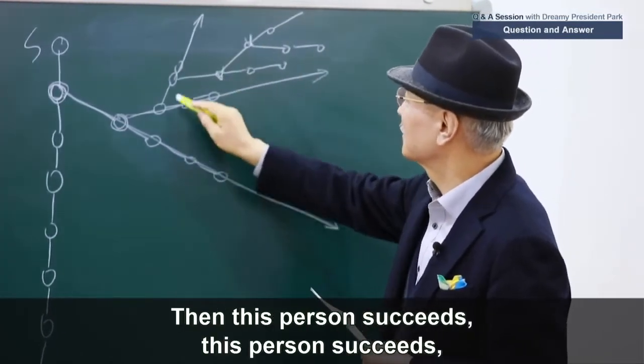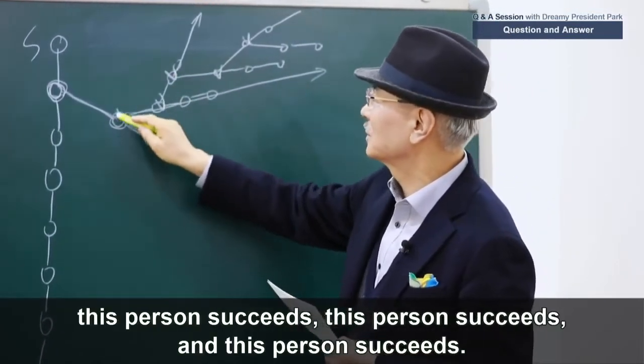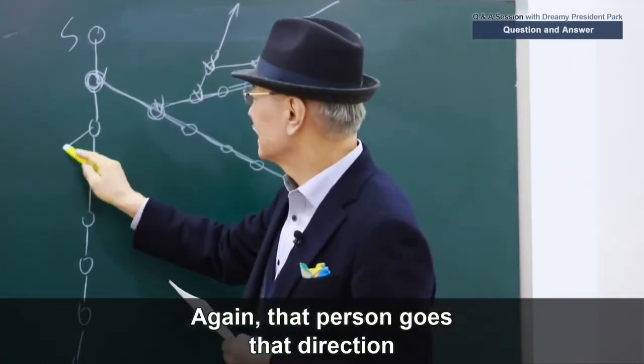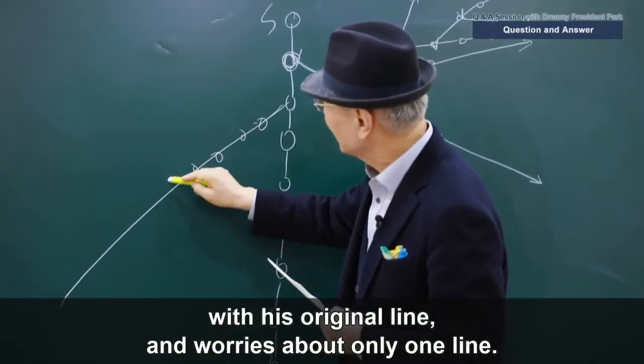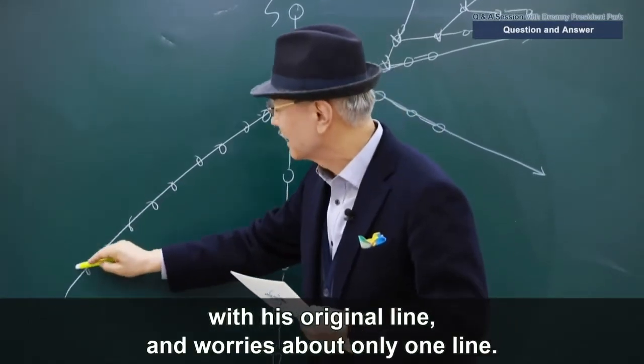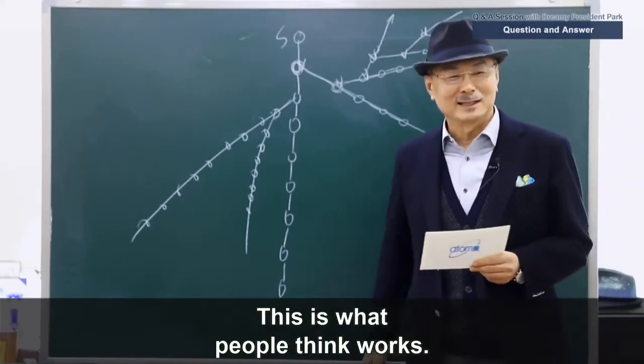And this person succeeds, and this person succeeds, this person succeeds, this person succeeds, and then this person succeeds. Again, that person goes that direction with his original line, and he only worries about one line, this is what people think works.